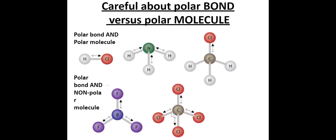Similarly, in CCl4 you have a central carbon atom with four chlorine atoms. The electronegativity difference between chlorine and carbon is large enough to give polar bonds, but because you've got the same four atoms bonded to the central atom they spread out equally around it. With no lone pairs on carbon to push the bonds to one side, this molecule is symmetrical and therefore non-polar - the polarity of the bonds cancel each other out.